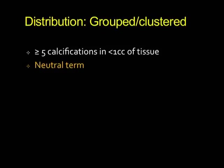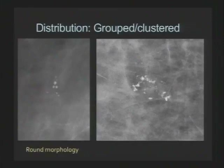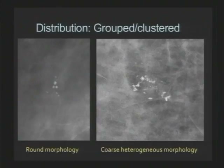The next category is grouped or clustered — by definition, five or more calcifications in a cubic cc of tissue. It's a neutral term; it doesn't mean suspicious or not suspicious. For example, a cluster of round calcifications can be BIRADS 3 with short-term follow-up, whereas coarse heterogeneous calcifications you would always biopsy. So the morphology really dictates management for grouped or clustered calcifications.